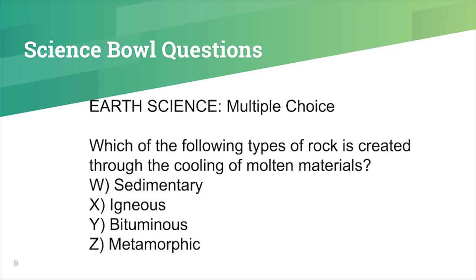A few more toss-ups. Earth science, multiple choice: Which of the following types of rock is created through the cooling of molten materials? Is it W, sedimentary. X, igneous. Y, bituminous. Or Z, metamorphic. The answer is X, igneous.